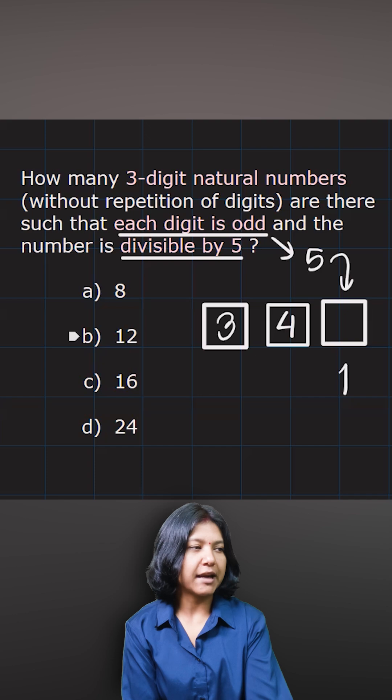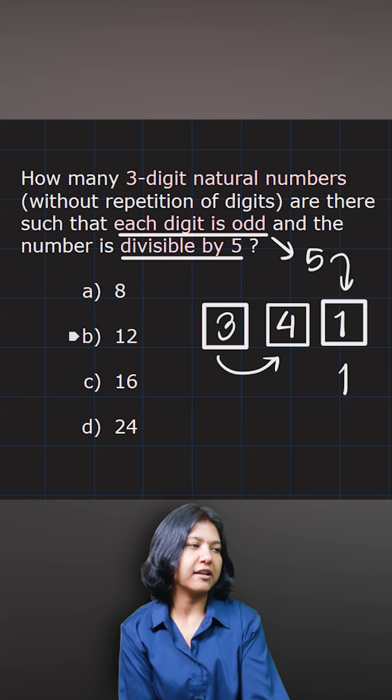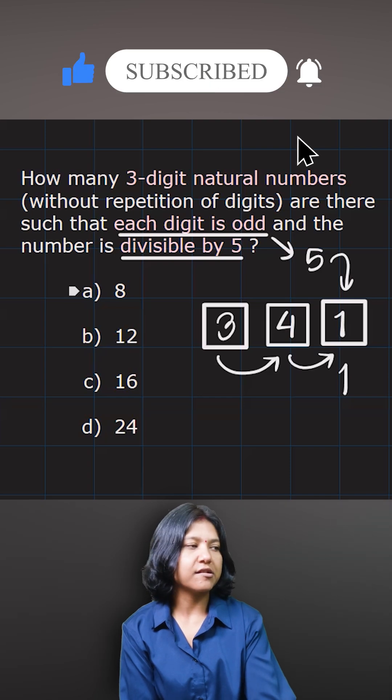Hence the total number of numbers formed here can be simply found out by multiplying three with four with one, because I have only one digit filling up this place. So three times four times one, the answer is twelve.